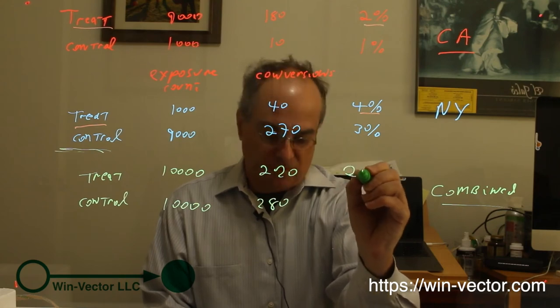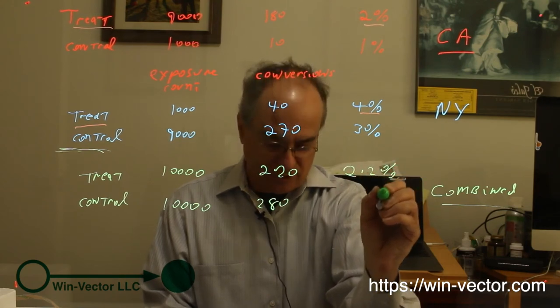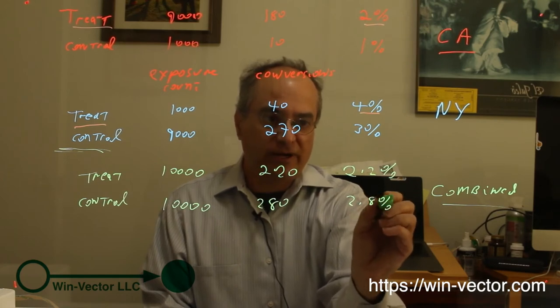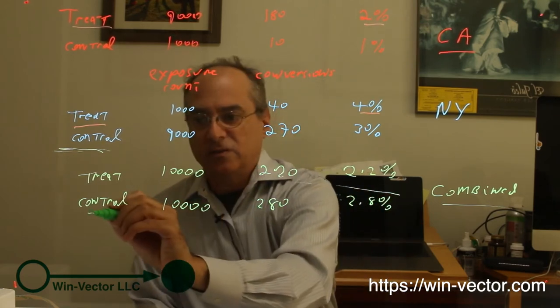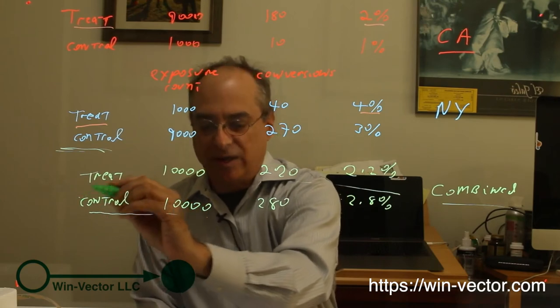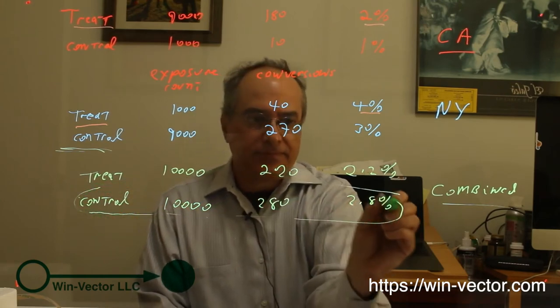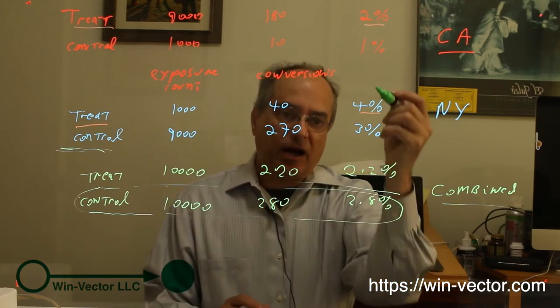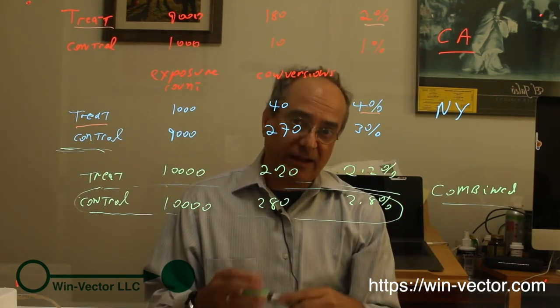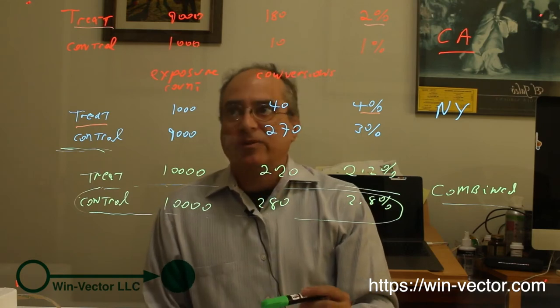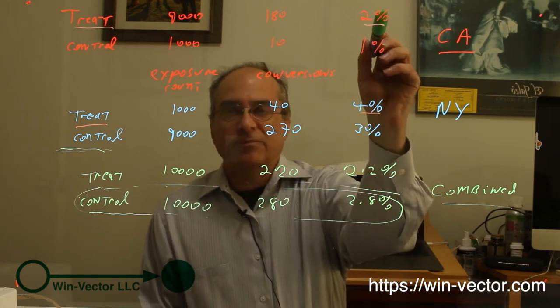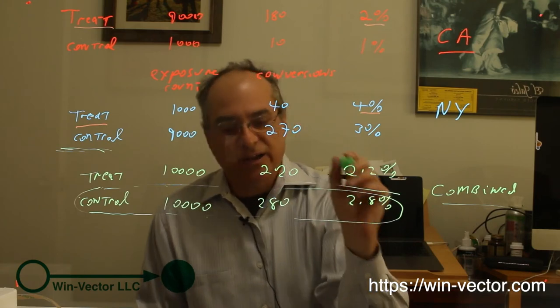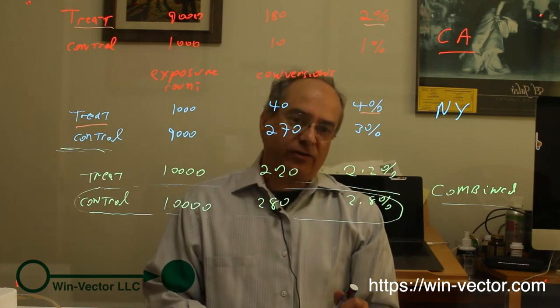And here's the problem. Treatment now has a 2.2% conversion rate. Control has a 2.8% conversion rate. So control dominates, literally reversing the observation in both of the groups that make it up. It's not like we added any more data. We observed in California, treatment dominates control. In New York, treatment dominates control. Yet, when we aggregate the data, the trend reverses.